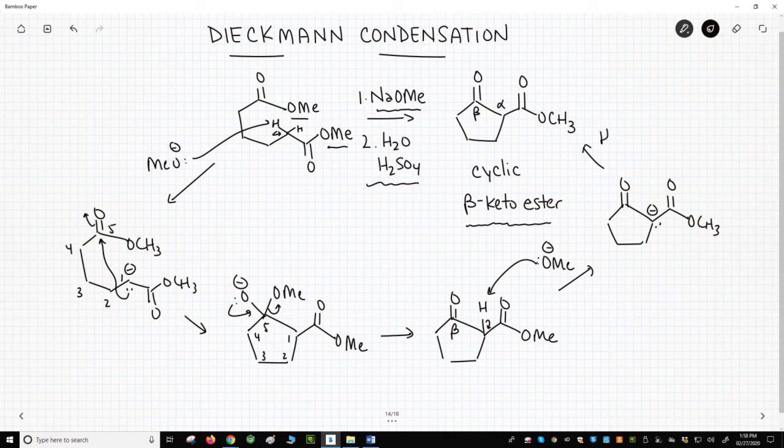acid and water is added in the second step to neutralize the enolate and give the final beta-ketoester.